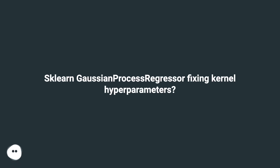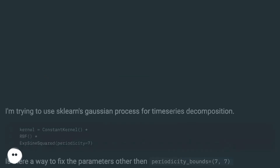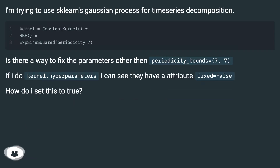Sklearn GaussianProcessRegressor: fixing kernel hyperparameters. I'm trying to use sklearn's Gaussian Process for time series decomposition.